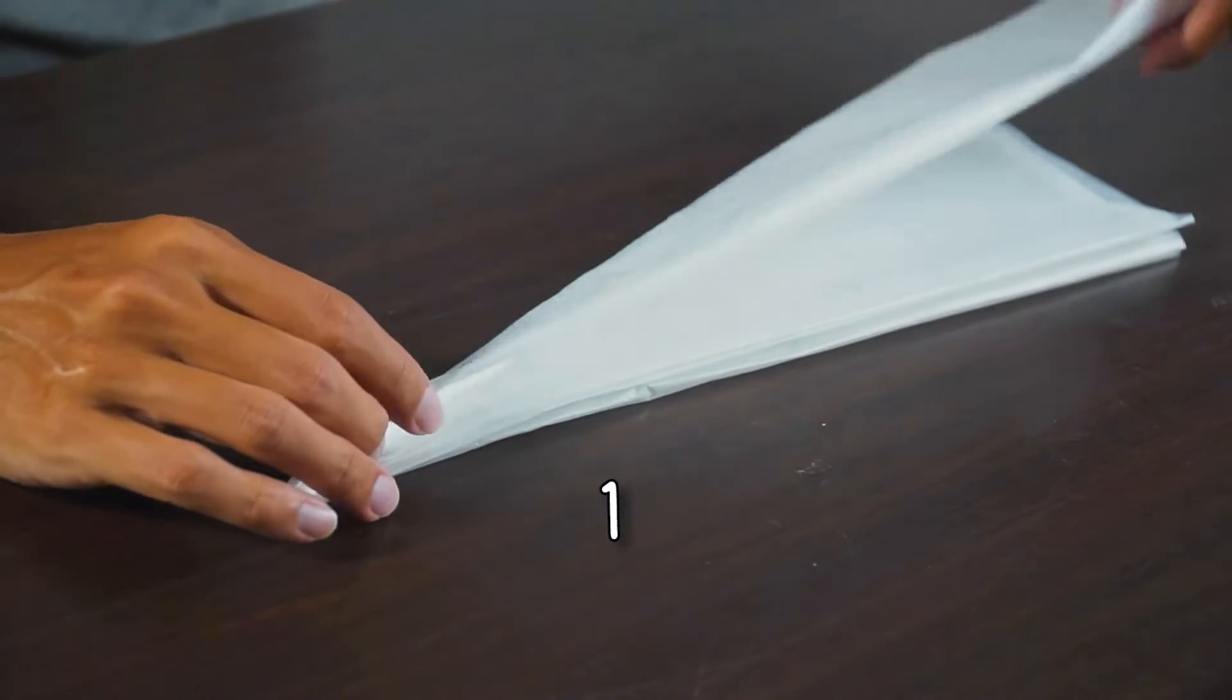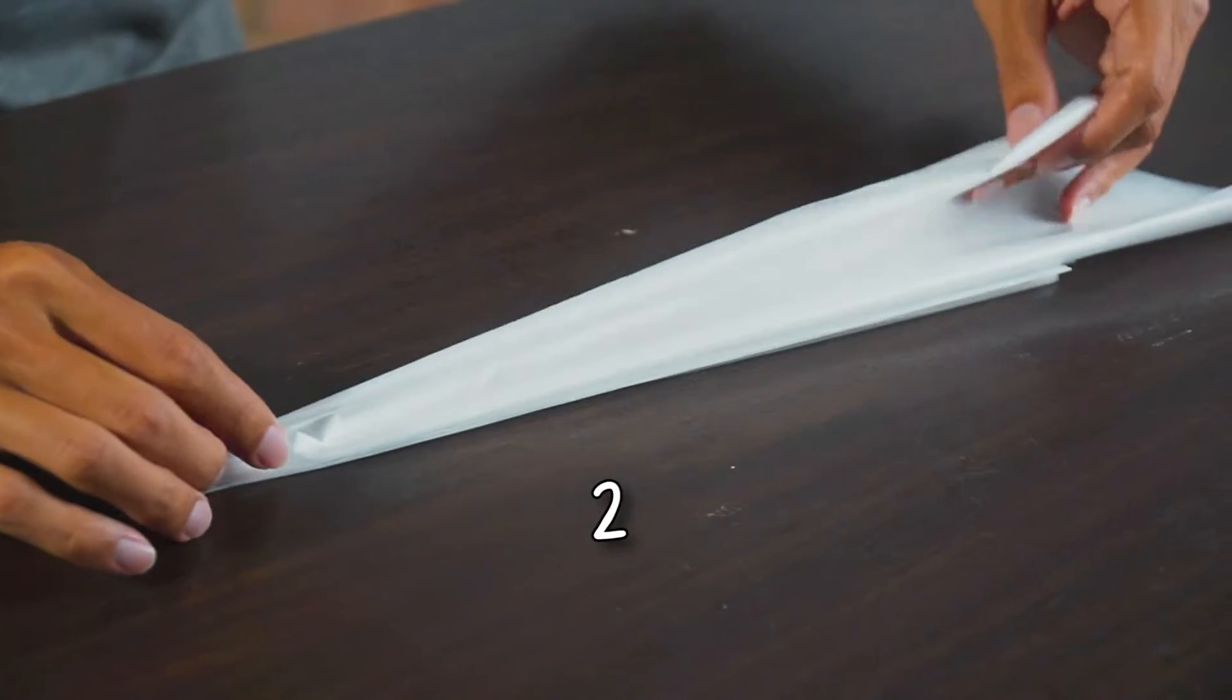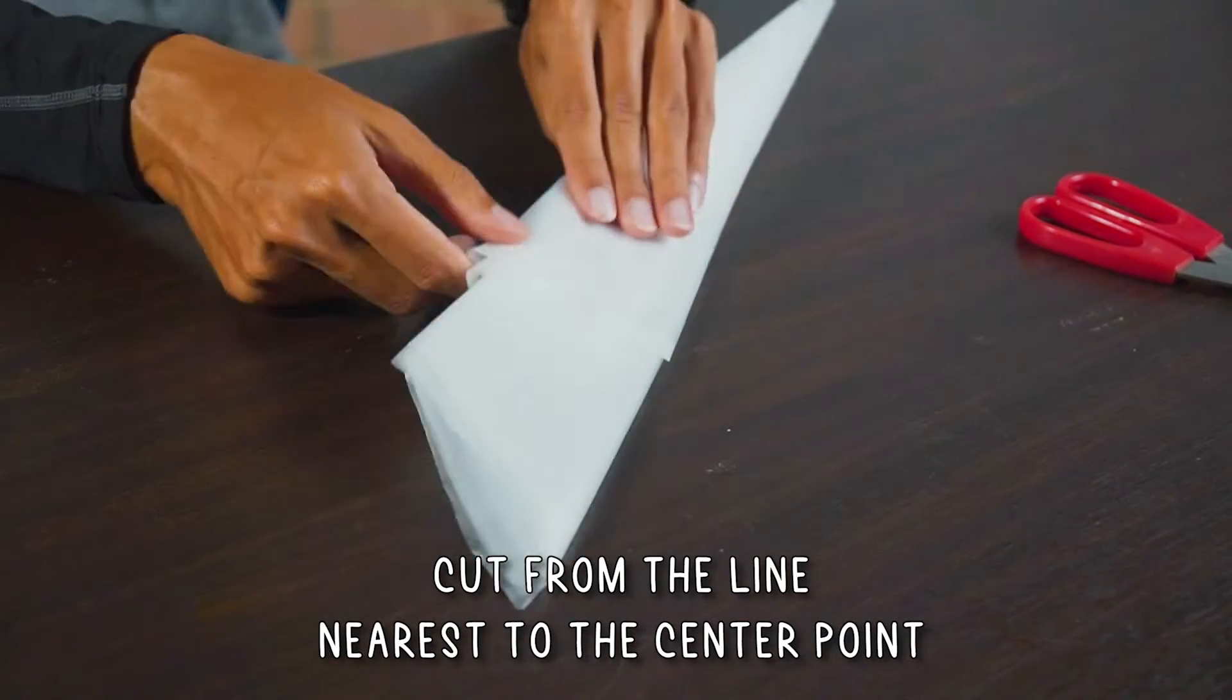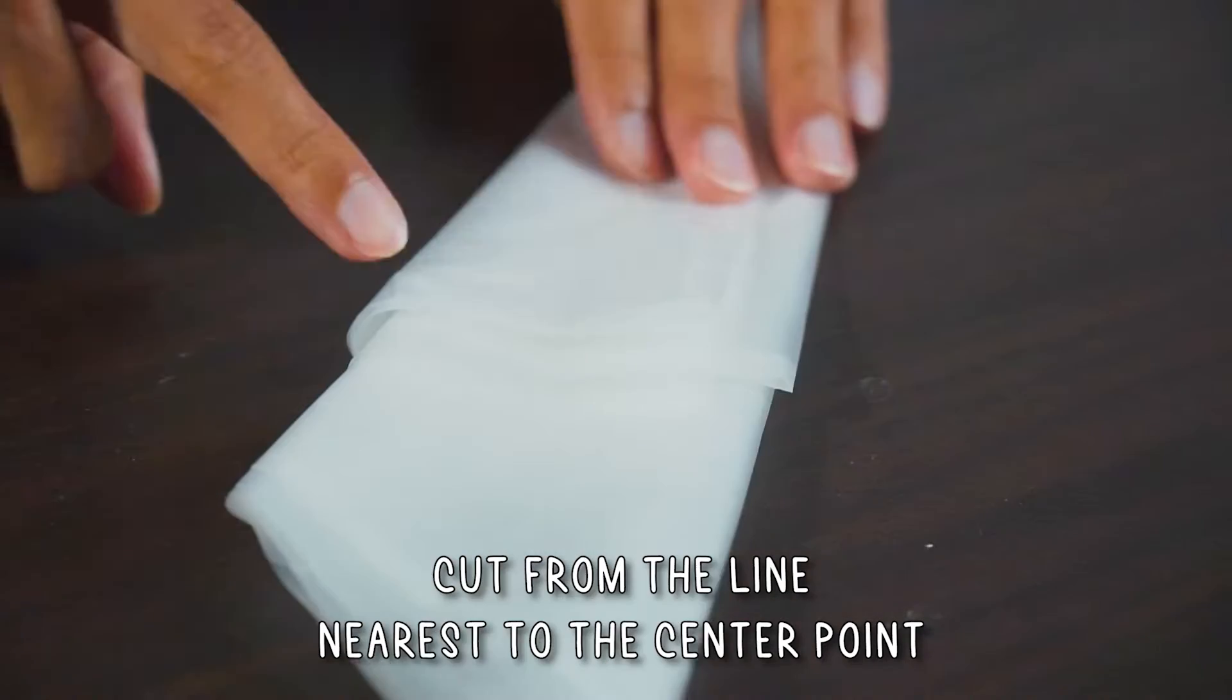Now, do the same thing and fold in half another two more times. Find the shortest edge just before the excess edges and cut a straight line from there.